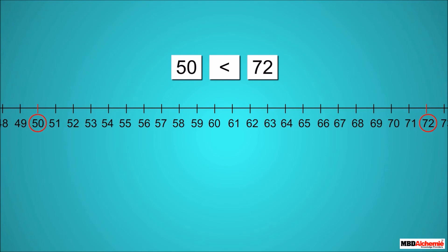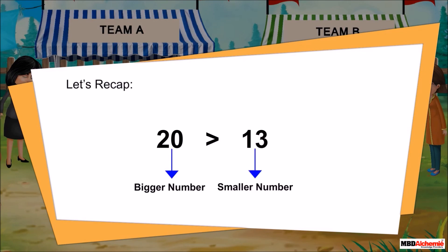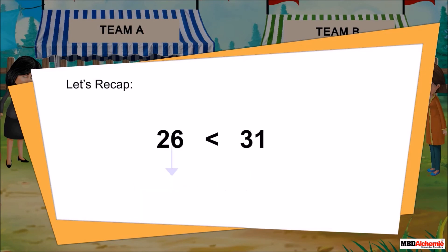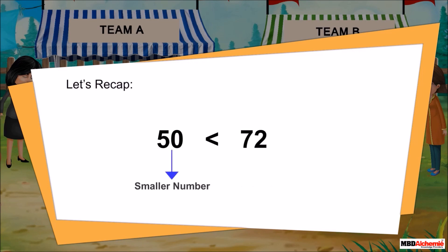Similarly we can find many more examples of bigger or smaller numbers. Let's recap: 20 is a bigger number and 13 is a smaller number. 25 is a smaller number and 36 is a bigger number. 32 is a bigger number. 50 is a smaller number and 72 is a bigger number.